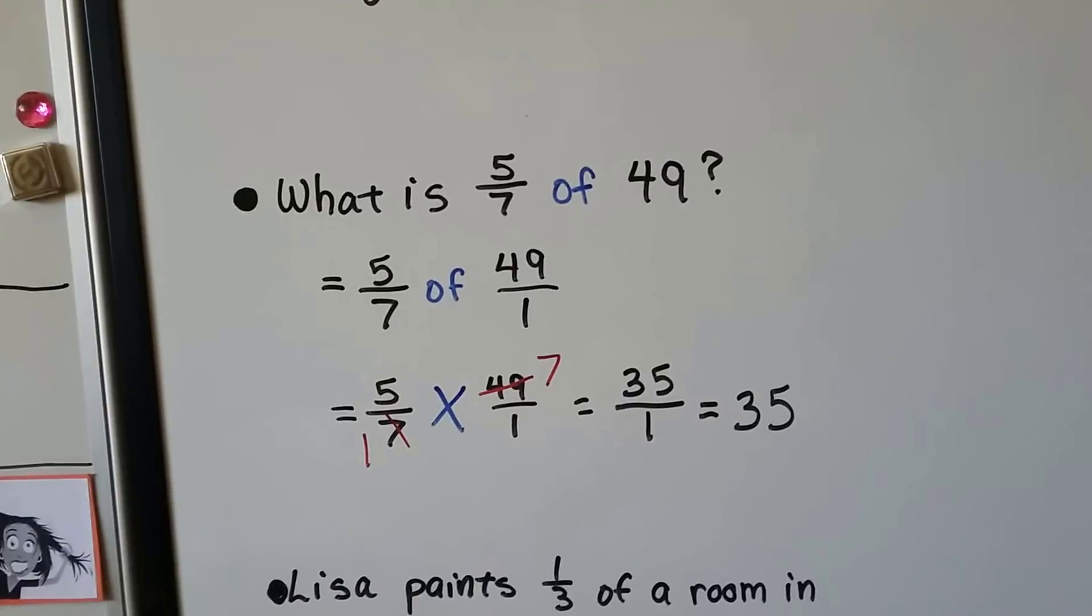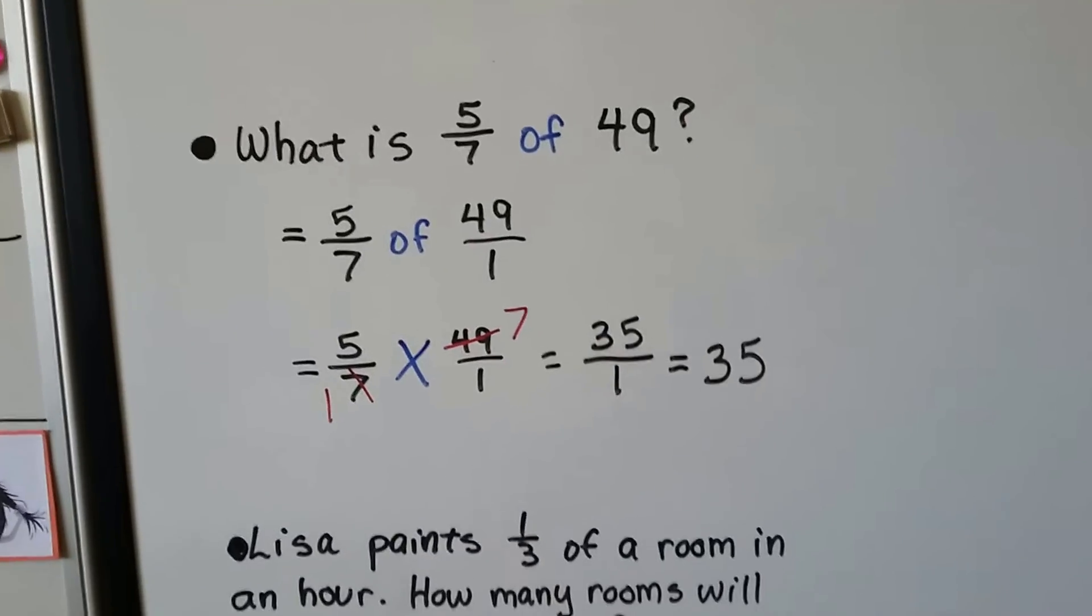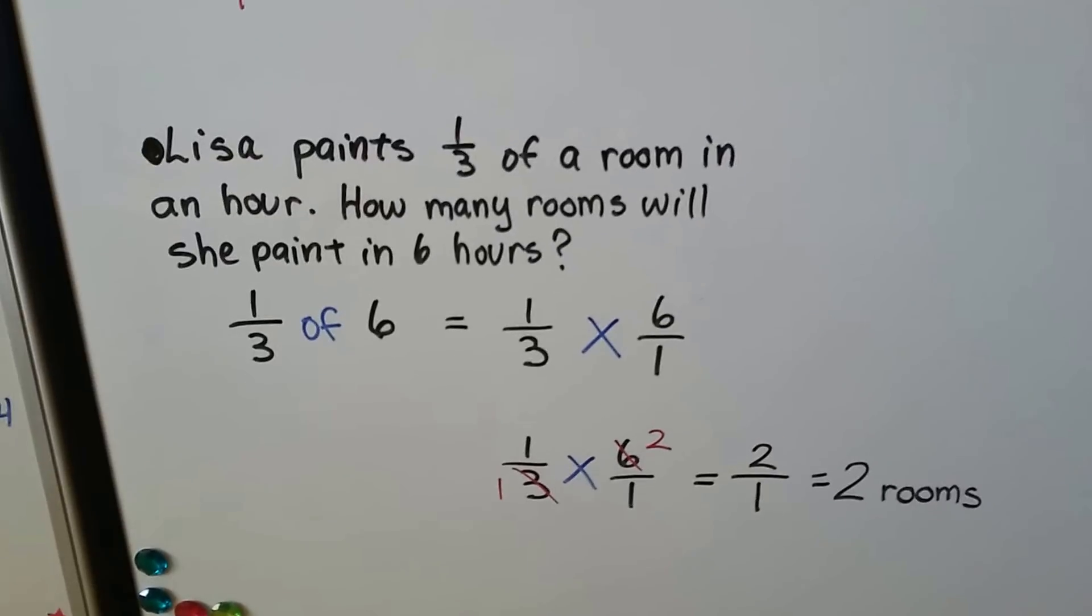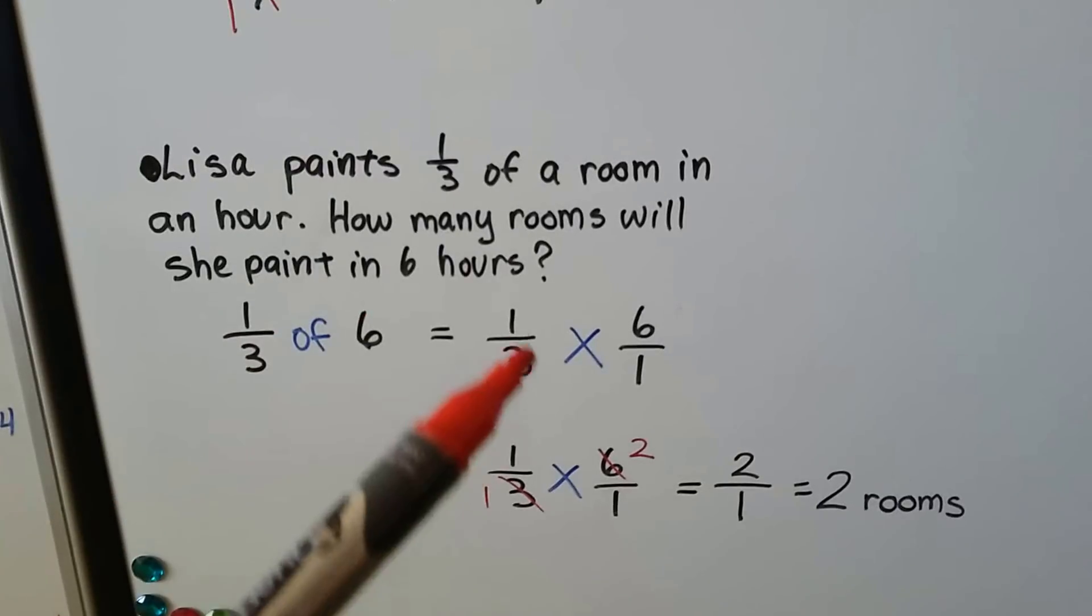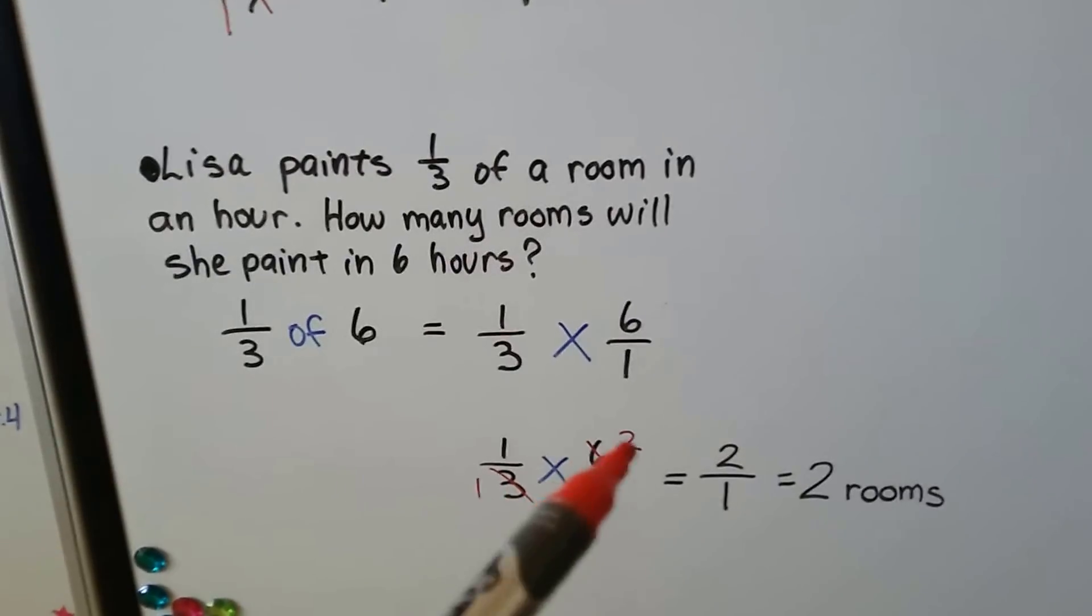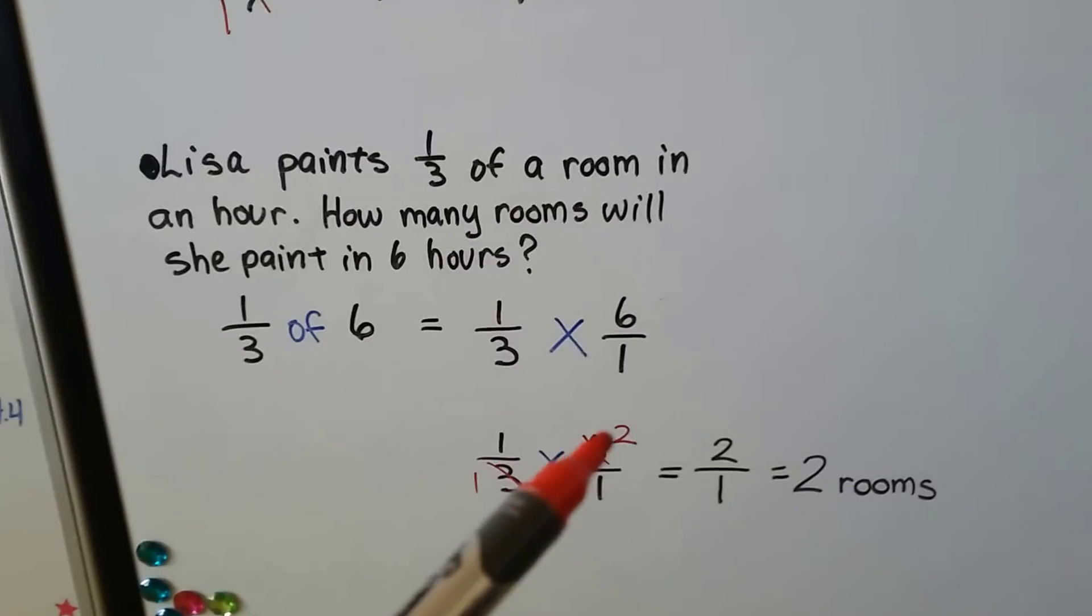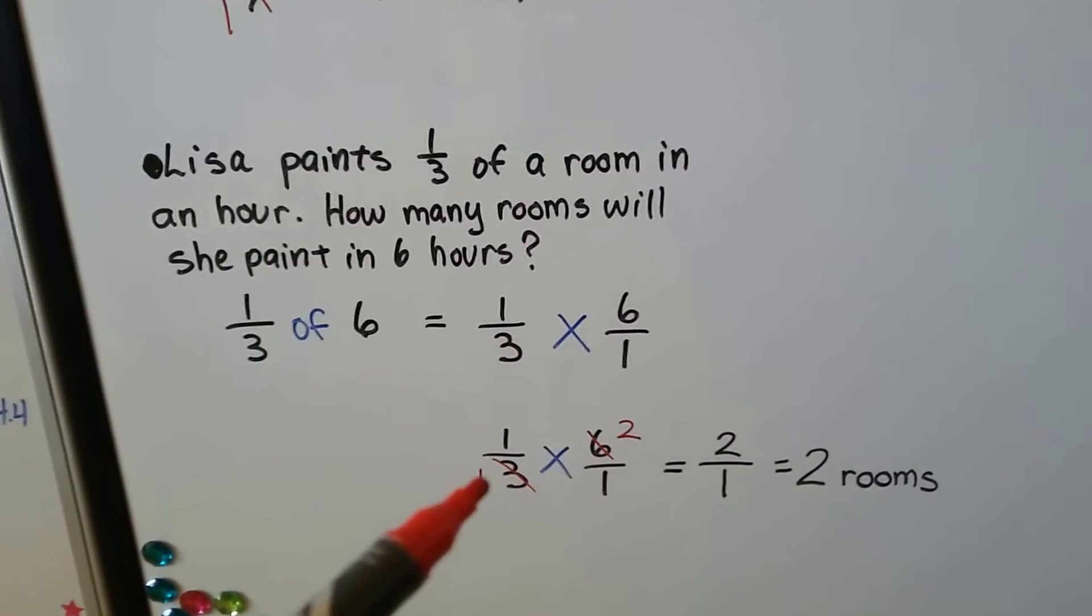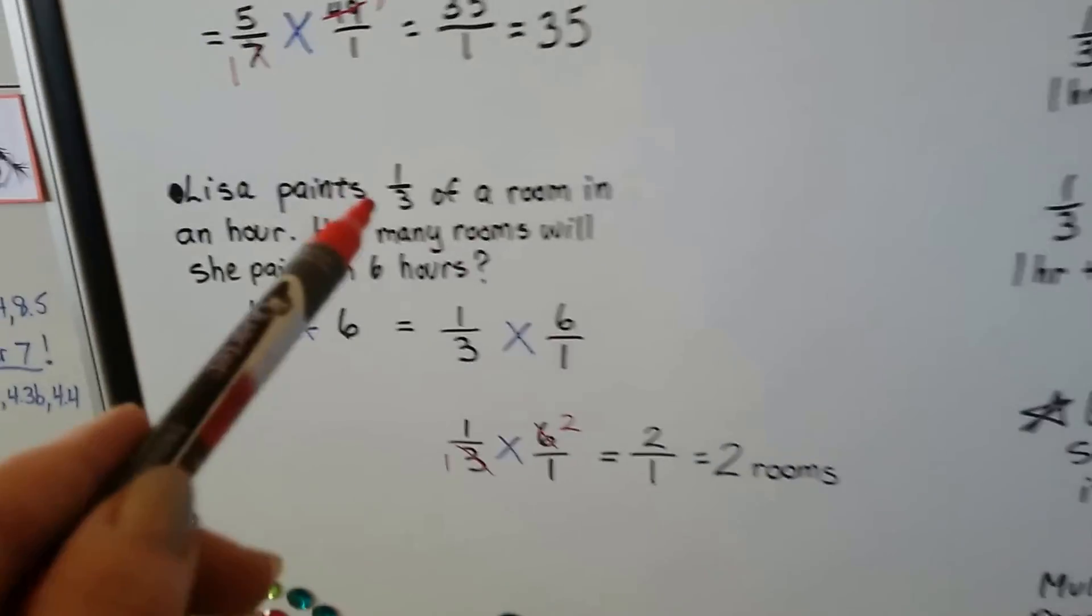Knowing your multiplication tables and doing the cross-cancelling and knowing your multiples and factors and stuff are really going to help you. Let's look at this one. Lisa paints 1/3 of a room in an hour. How many rooms will she paint in 6 hours? So we need 1/3 of 6. So we can write it as 1/3 times 6 over 1. Turn that 6 into a fraction. The 3 and 6, we can cross the 3 out as a 1 and the 6 out as a 2. There's two 3s in here and there's one 3 in here. Now we can just do 1 times 2 is 2 and 1 times 1 is 1. That's two rooms.